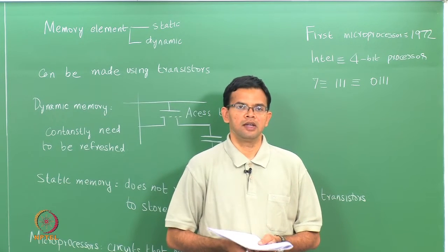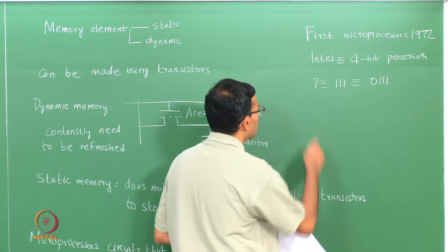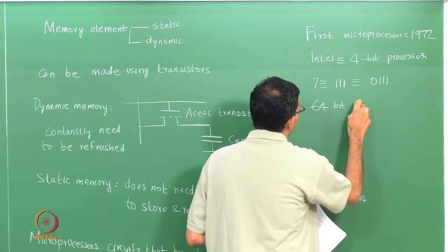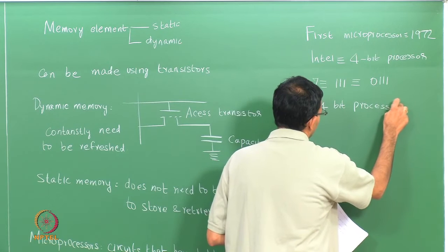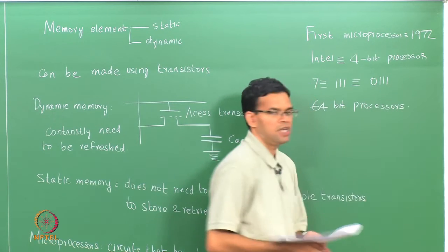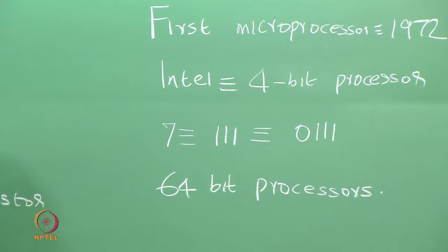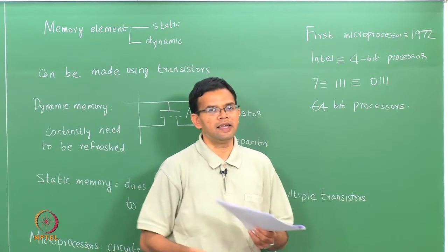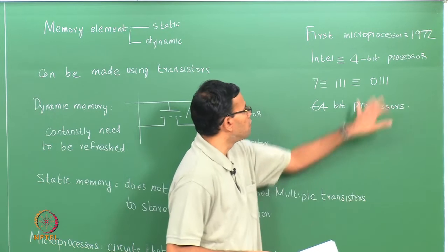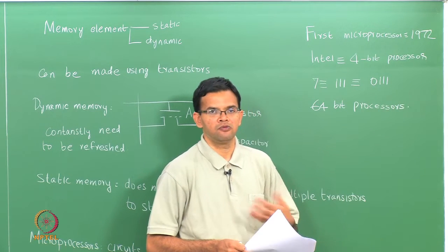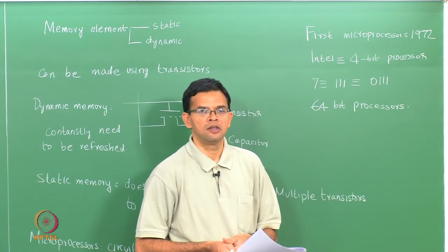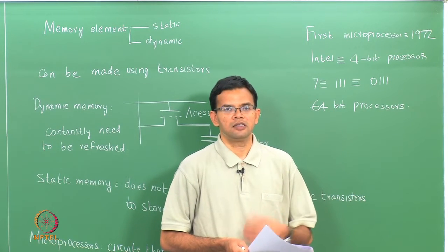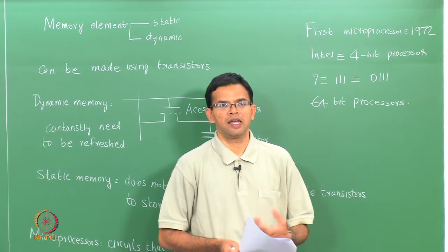Now we have processors that are essentially 64-bit. The same number 7 can be written as a 64-bit number, but essentially all the leading elements would be 0s followed by the last three 1s. We have looked briefly at IC circuit logic; the next thing I am going to look at is packaging — how we take the final die and then package it so that it can become part of an external circuit.